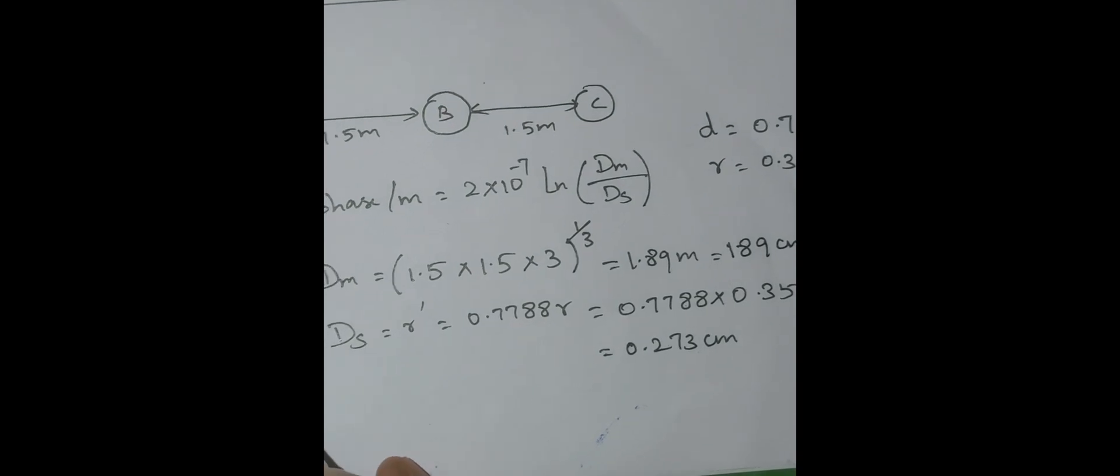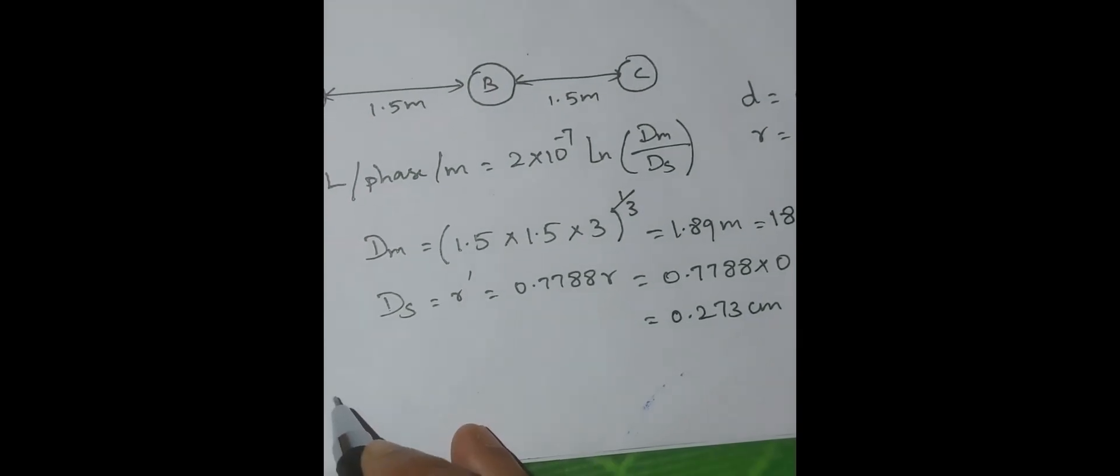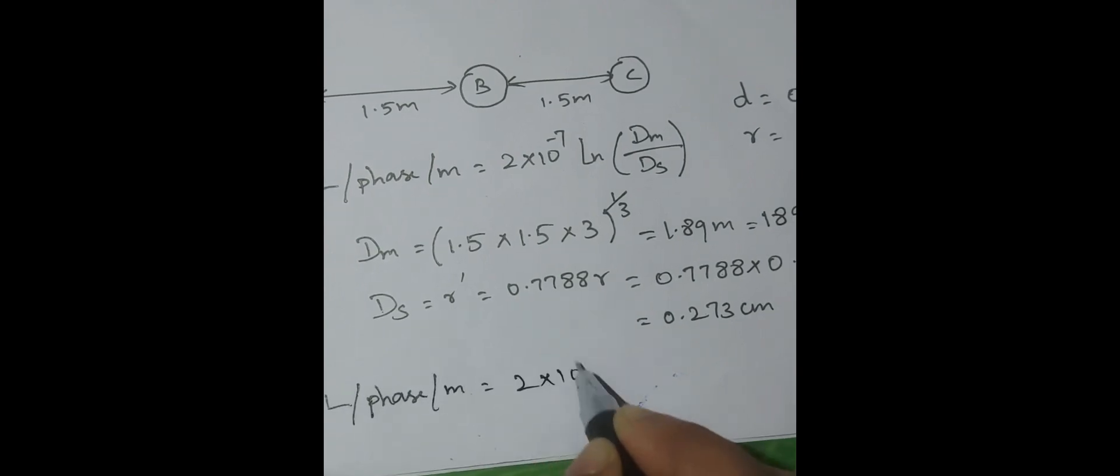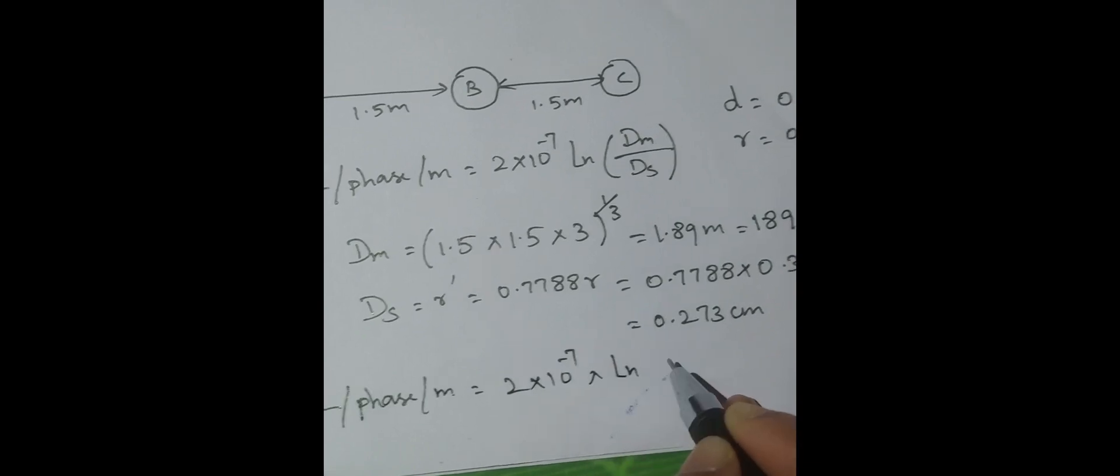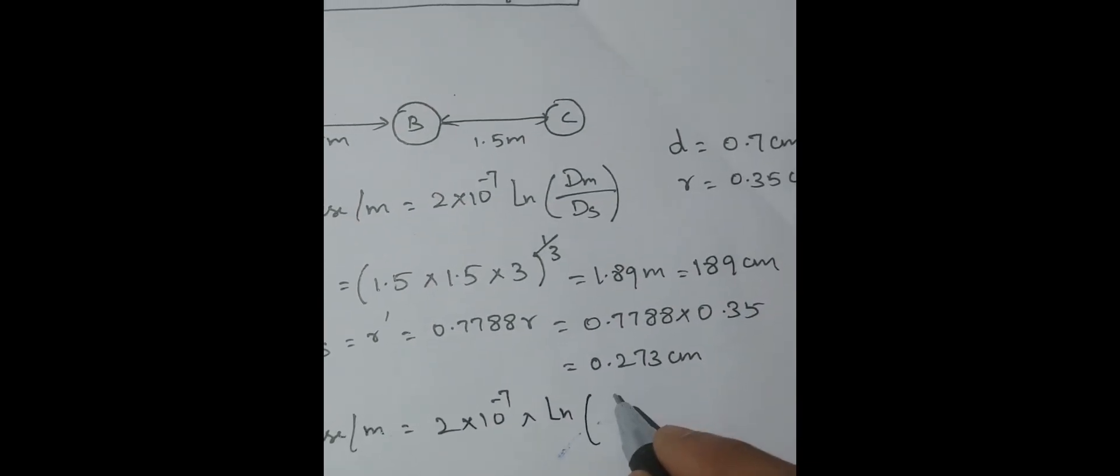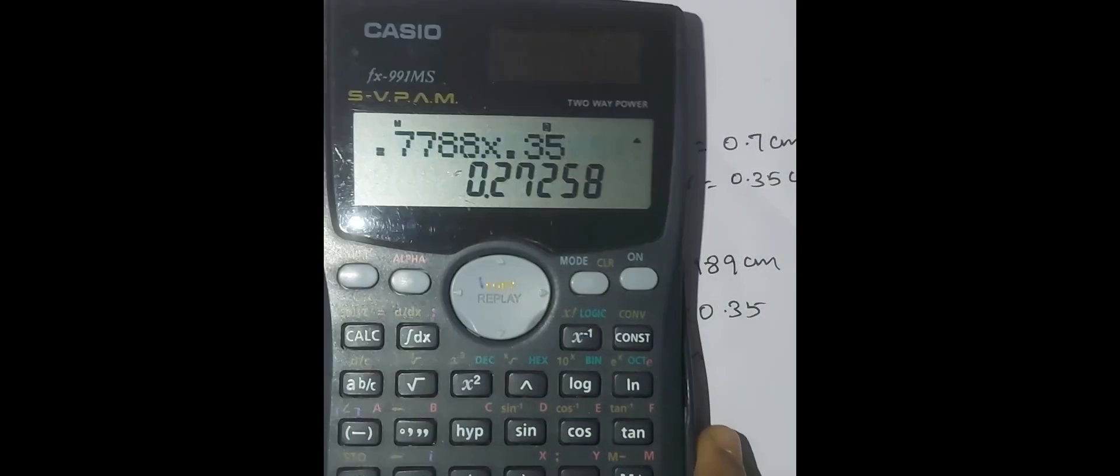Now substituting in the formula. L inductance per phase per meter is equal to 2 into 10 power minus 7 ln of DM. DM answer is 189 divided by 0.273. If you operate this 2 into 10 power minus 7.